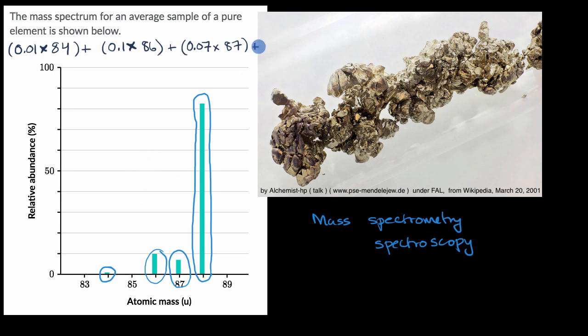And then plus, this looks like it's about 82%. So 0.82 times 88 universal atomic mass units. And so let's find this weighted average.